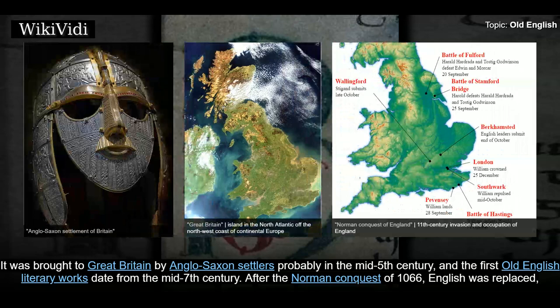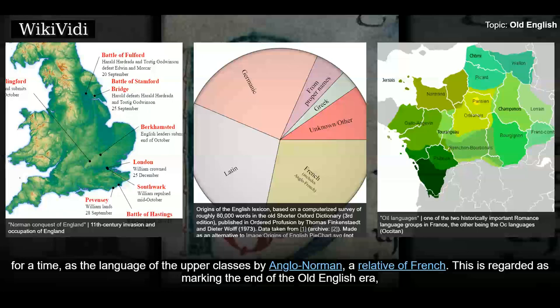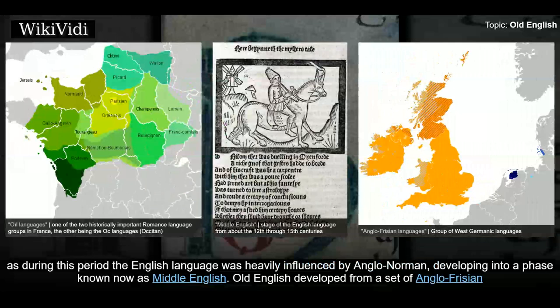After the Norman conquest of 1066, English was replaced for a time as the language of the upper classes by Anglo-Norman, a relative of French. This is regarded as marking the end of the Old English era, as during this period the English language was heavily influenced by Anglo-Norman.